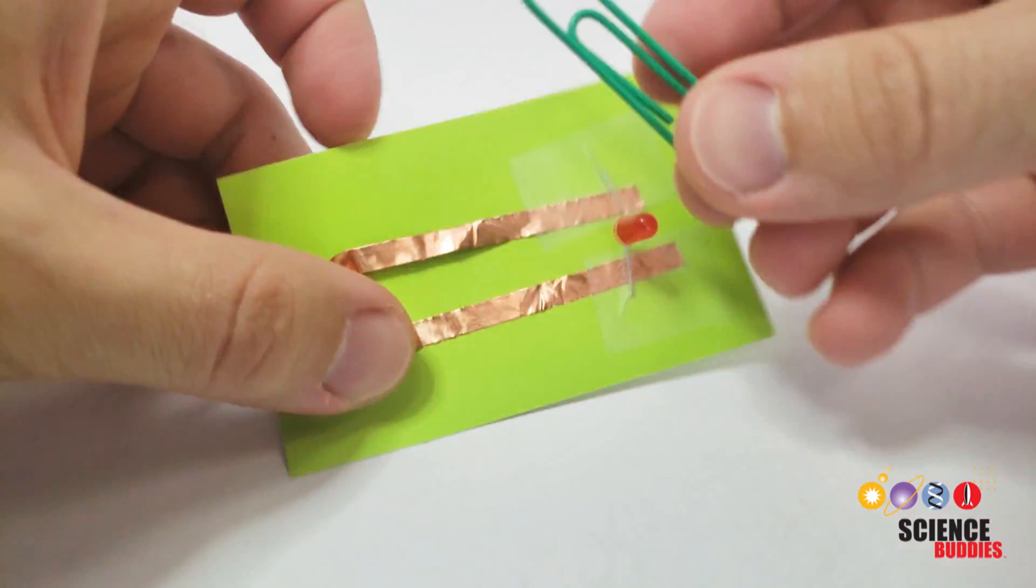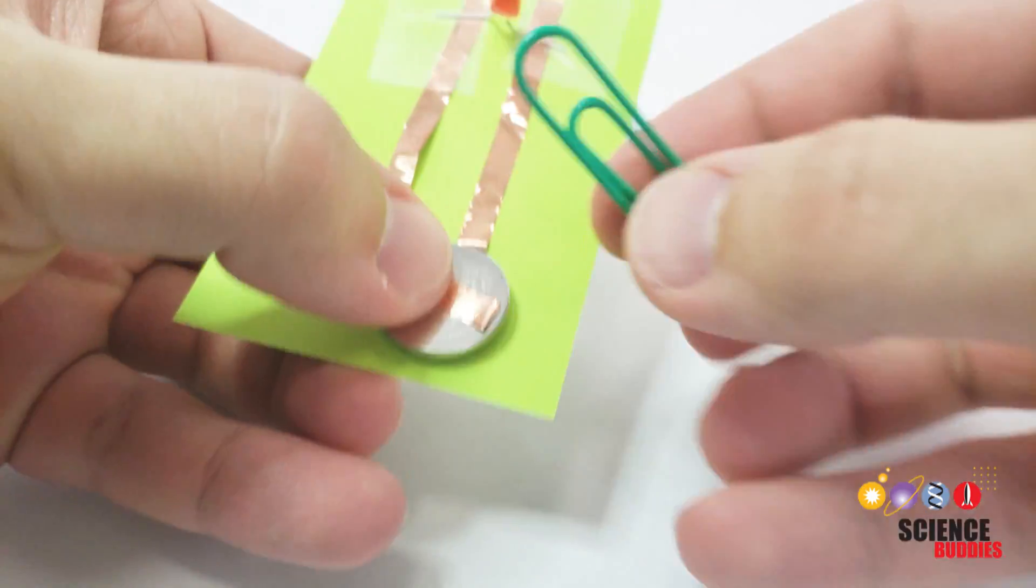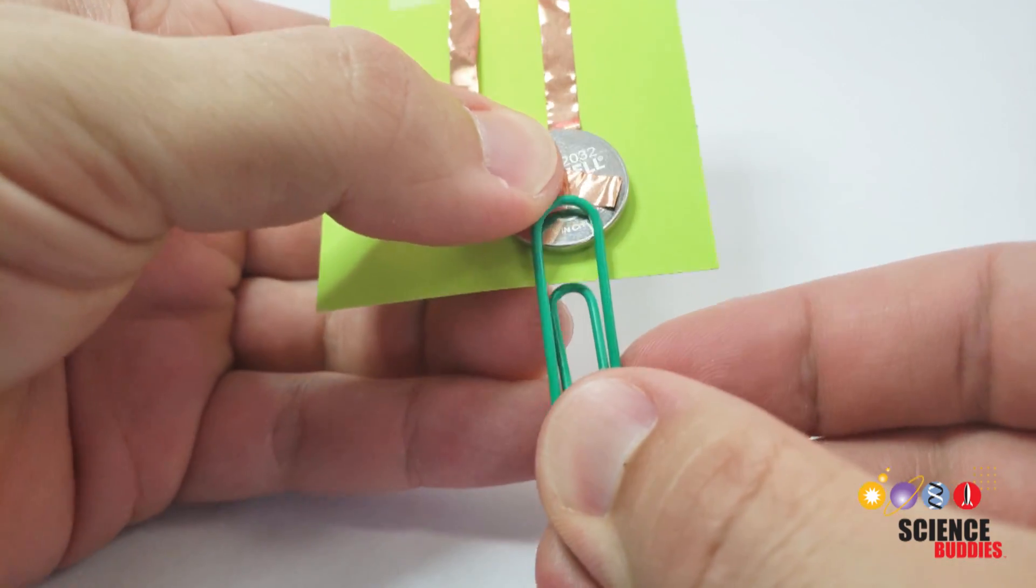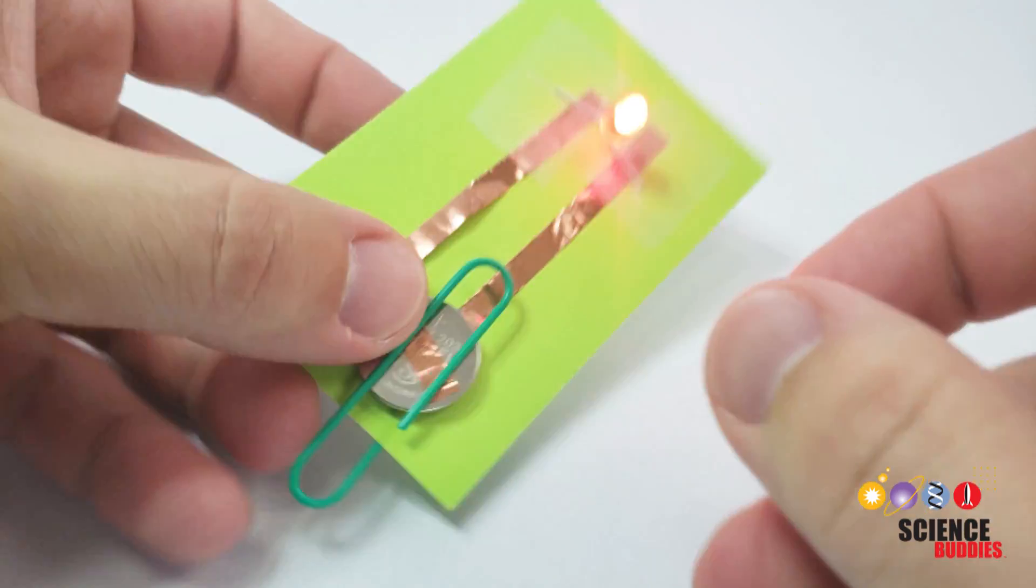If you want your circuit to stay on, you can use something like a paper clip or a binder clip to apply some pressure to the battery to make sure it makes good contact with the copper tape.